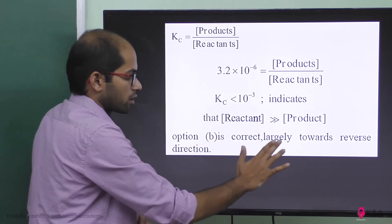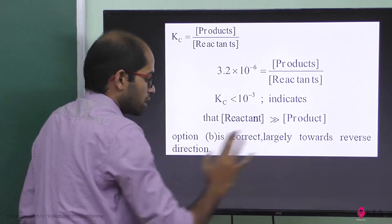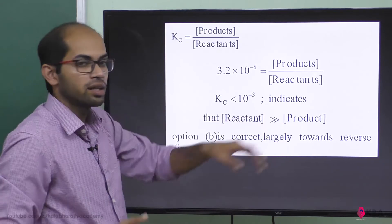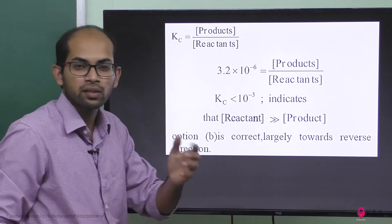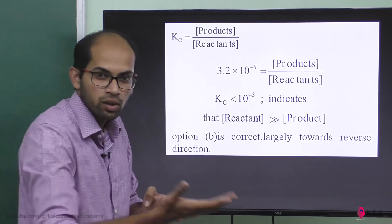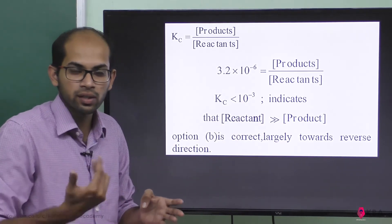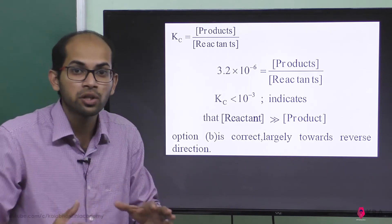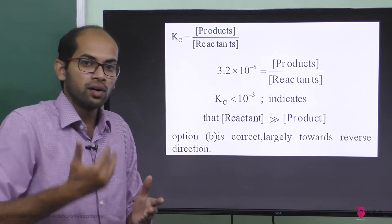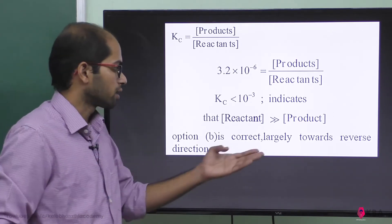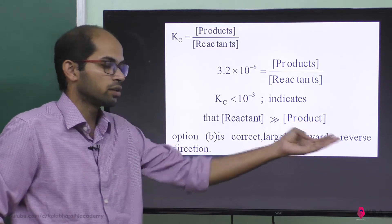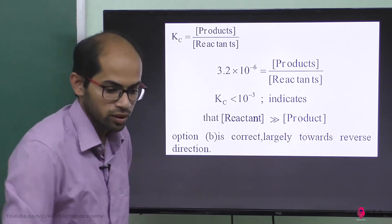Option B is correct: largely towards reverse direction. The reactants dominate over products. Products are not favored, meaning in the equilibrium condition the reaction is largely towards the reverse direction.